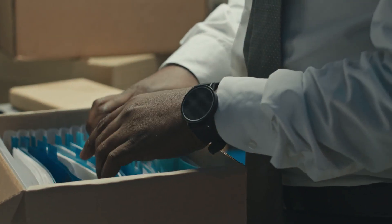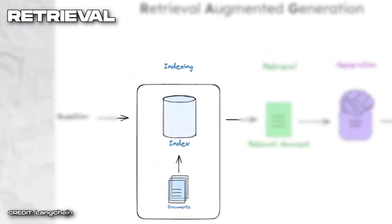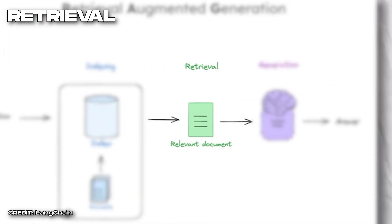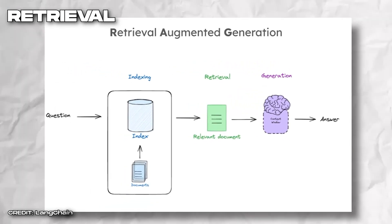Now that solves the problem of the AI generating useful responses, but we can make it better. What if the AI can get these documents automatically and provide them to the prompt at runtime, so it provides the right responses based on the documents? That's the Retrieval, or the R in RAG. What we do is index relevant documents and store them in a database so that we can retrieve them at runtime and attach them to the prompt for the LLM to generate correct responses based on the documents provided.